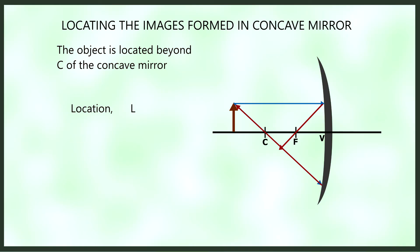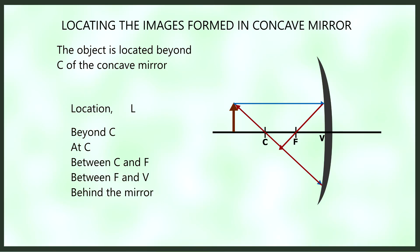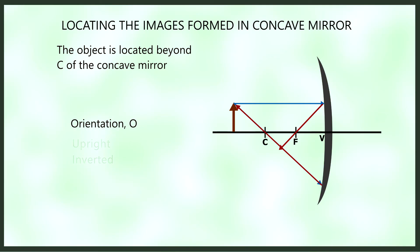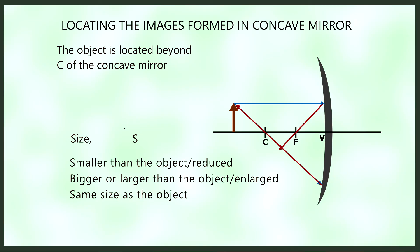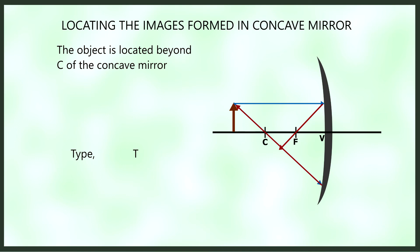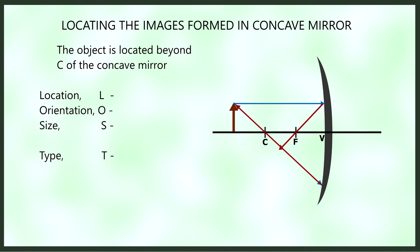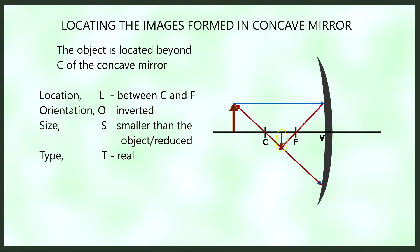The location is described relative to the parts of the mirror — it can be beyond C, at C, between C and F, between F and V, or behind the mirror. The orientation can be upright or inverted. The size can be smaller than the object (reduced), larger than the object (enlarged), or the same size as the object. So if the object is placed beyond C of the concave mirror, the image location is between C and F, the orientation is inverted, the size is smaller than the object (reduced), and the type is real because the reflected rays actually meet at a point.